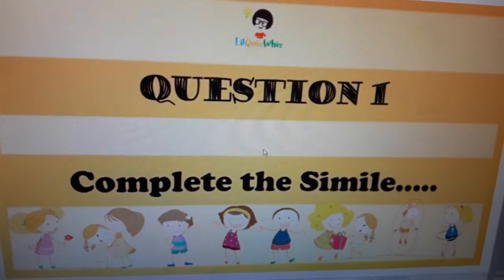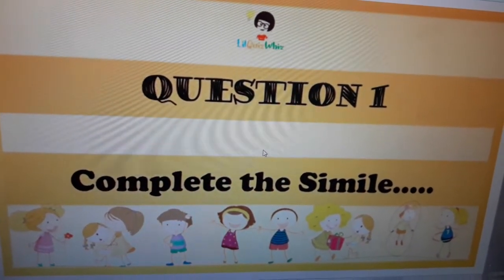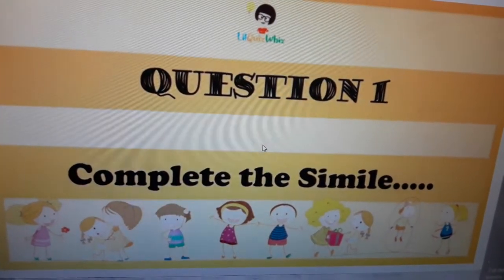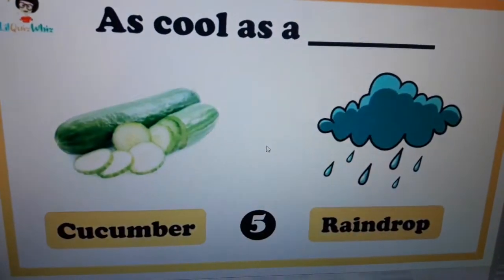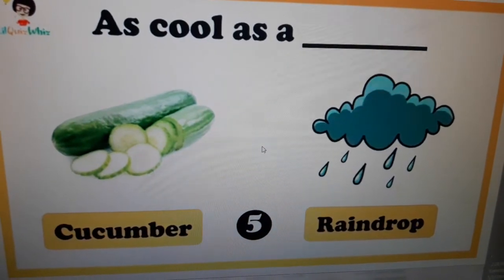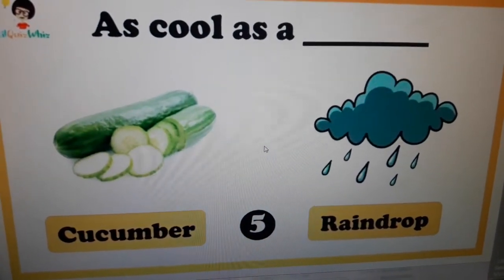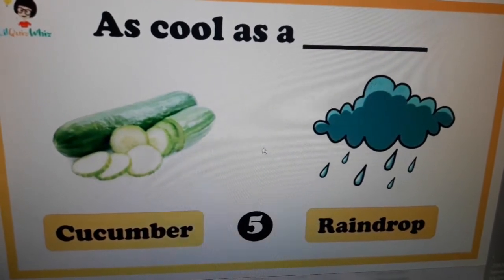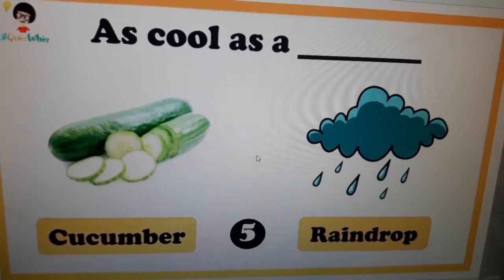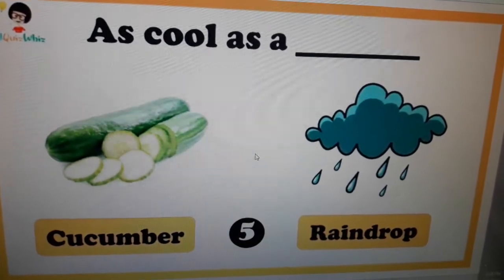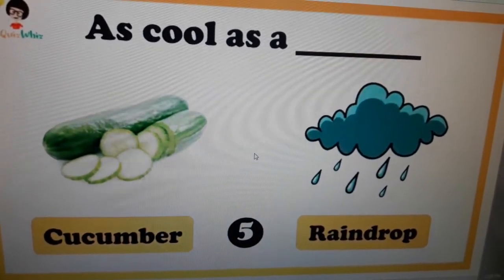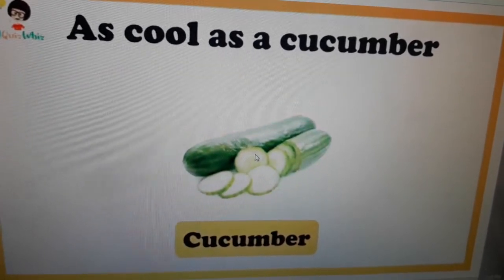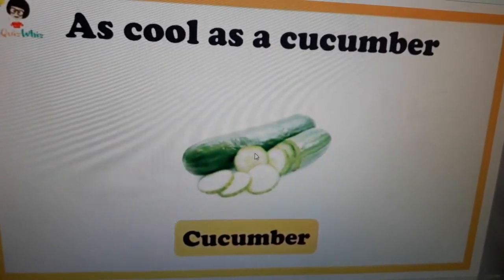Now let's see some questions. Question number one: complete the simile — 'as cool as a ___'. Choose one option: cucumber or raindrop. Any guesses, students? The answer is: as cool as a cucumber.